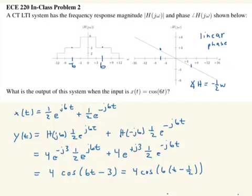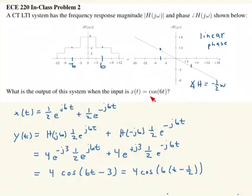As we noted in our previous video, if the system is real, the frequency response is symmetric — meaning the magnitude is even and the phase is odd — then we're always going to be able to put it back together. If we had an input of a cosine, the output will also be a cosine, where the magnitude is affected by the magnitude of the system at the frequency. The input was cosine 6t; the output is 4 cosine(6t minus 3), phase shifted by minus 3, because that's the value of the phase of the system at 6. This is quite straightforward using the eigenfunction property.